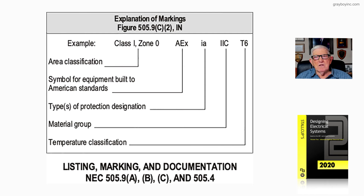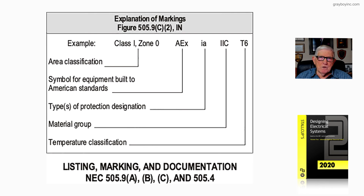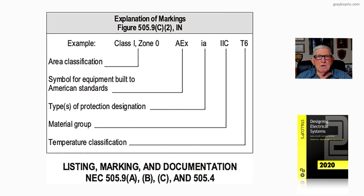Then the temperature classification is T6, so you could put it in a temperature area that falls under the table of your T-code letters, which is T6. This is the type of marking that will be on equipment manufactured in Europe, for example, showing that it meets United States standards so the authority having jurisdiction can look at NEC 110.3b and c and approve the equipment by 500.8a. That's what illustration 21-69 is showing the user of the NEC.